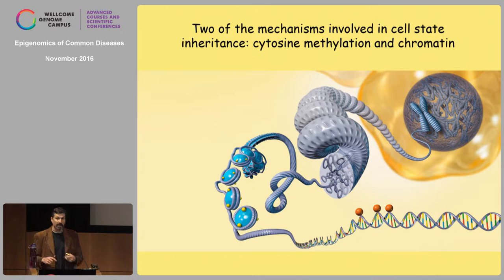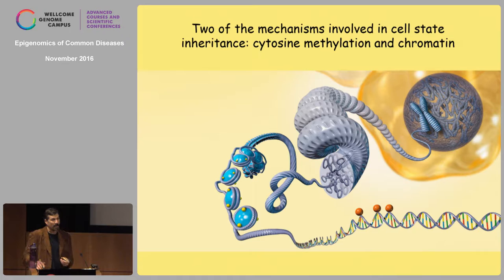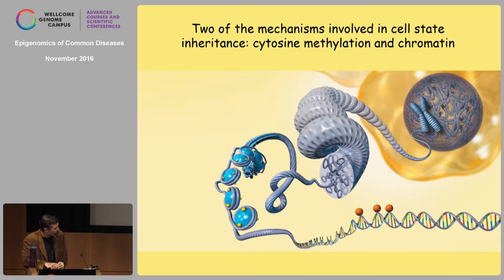Decades of study of cell state inheritance, for example in Drosophila, have identified many of the major epigenetic information carriers. In Drosophila, cell state inheritance depends on Polycomb and Trithorax group genes. These turn out to be chromatin regulators — that's one of the famous epigenomes. There's also cytosine methylation. The other major epigenome is small RNAs. In budding yeast, prions also play a much bigger role than they seem to in other organisms.